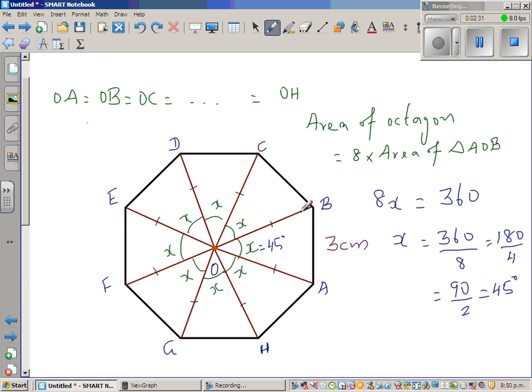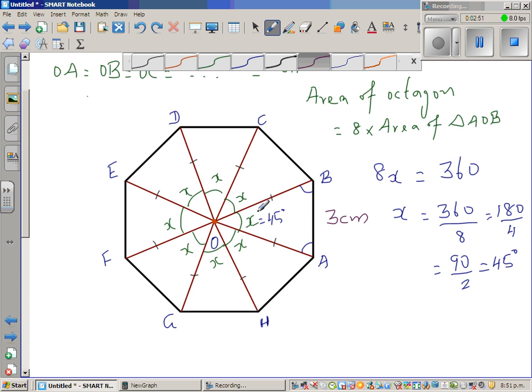So if you know this, can we find this? What can you say about these two angles? Angle OBA and OAB. They are base angles of an isosceles triangle. Okay, so hopefully you know that base angles of an isosceles triangle are equal.